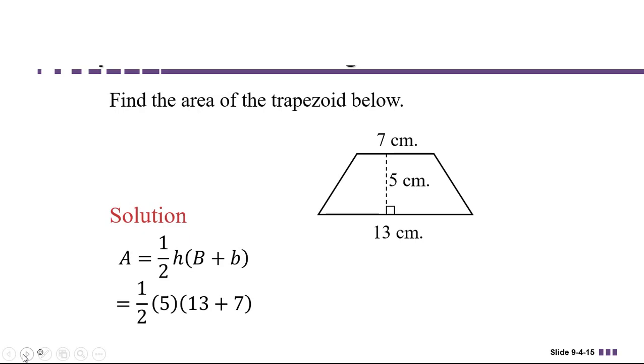So that'll be one-half times 5 times (13 plus 7). We have to work inside the parentheses first. So we're going to add first. That's going to give us one-half times 5 times 20. In order to avoid having to use fractions, I noticed that it's easier to take half of 20 rather than half of 5. And you can do that because multiplication is commutative. In other words, the order doesn't matter. So I went ahead and took half of 20, which gave me 5 times 10.